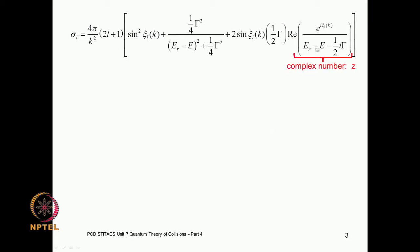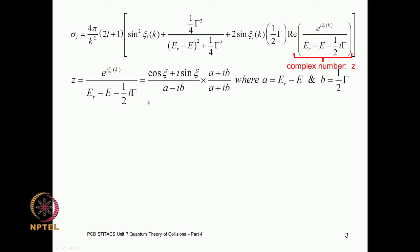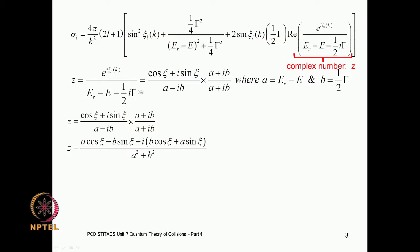Let us look at this expression. We have a real part of this complex number. I will look at this complex number and rewrite it in a slightly different way. I take this complex number and write it in terms of A and B. In the complex number you have a real part and an imaginary part, and also a real part and an imaginary part in the numerator which is cosine psi and sine psi. You multiply and divide by the complex conjugate of the denominator and then reconstruct this complex number so that you will have an effective real part and an effective imaginary part.